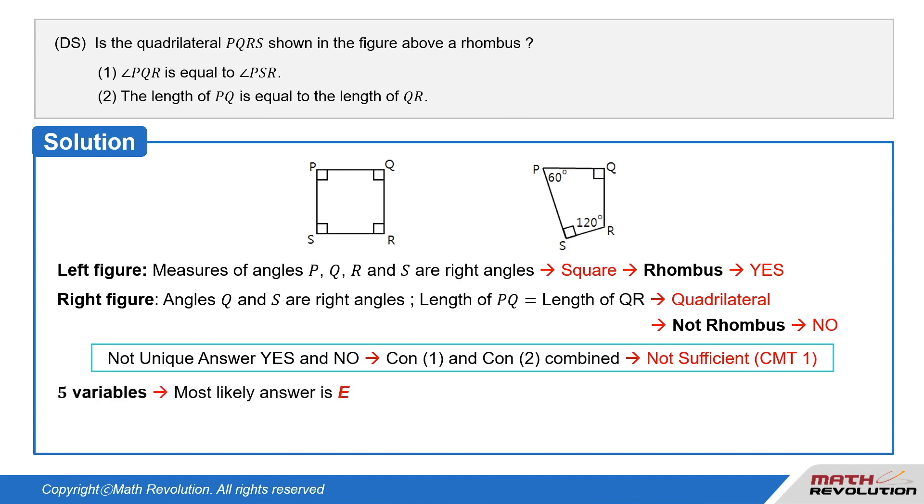The answer is E because there are five variables. The superiority of the variable approach really stands out in geometry DS questions. Both conditions 1 and 2 together are not sufficient. Thus E is the correct answer.